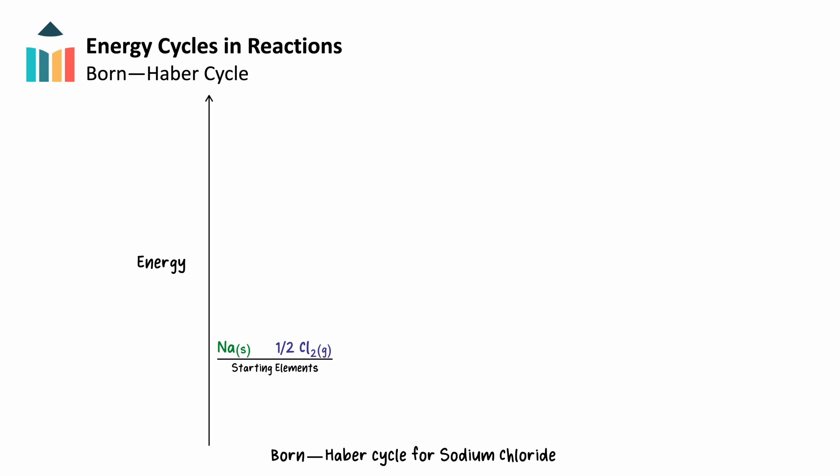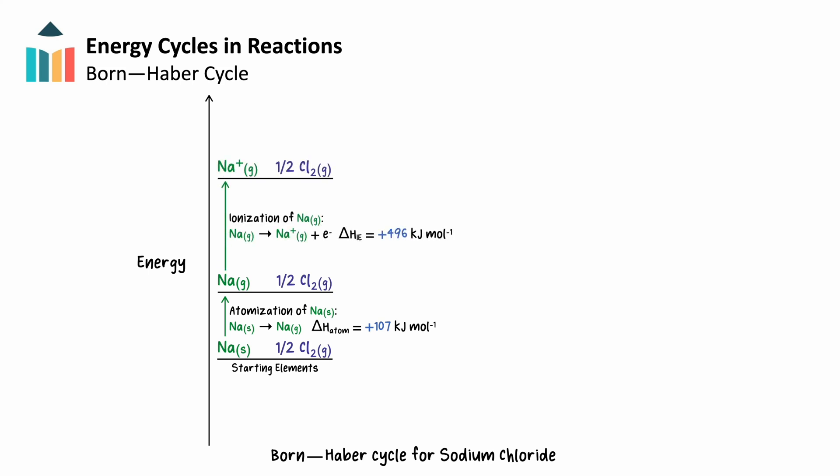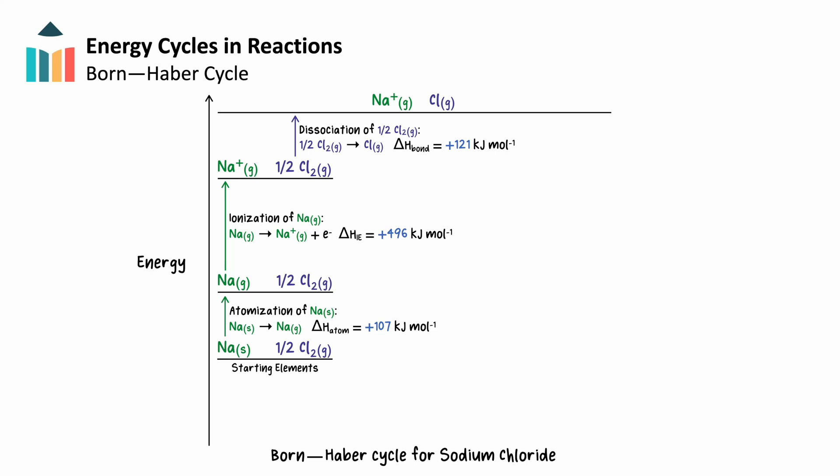For sodium, this journey begins with the atomization of solid sodium into sodium gas, which costs about 107 kJ of energy per mole of sodium. Next, we'll need to ionize our gaseous sodium. Sodium tends to form a positive ion and will lose an electron to form Na+. The energy required to remove an electron from an atom is called its ionization energy. For sodium, its first ionization energy is equal to 496 kJ per mole. Now turning our attention to chlorine, we'll need to transform our half mole of diatomic chlorine gas into chloride ions. Chlorine is found in nature as the diatomic Cl2, so we need to break our chlorine-to-chlorine bonds and form neutral chlorine atoms, requiring an additional 121 kJ of energy — half the bond enthalpy of 1 mole of chlorine molecules.